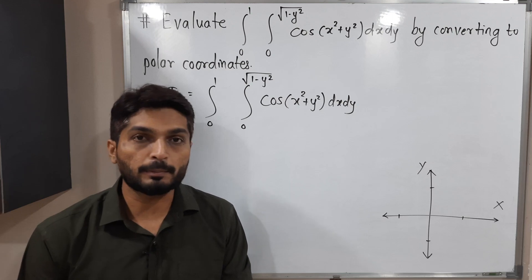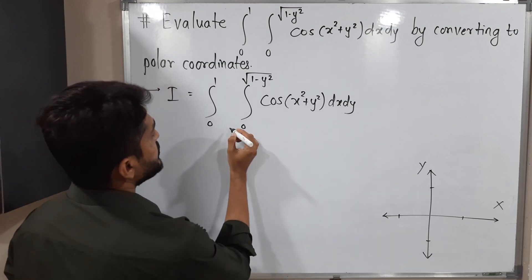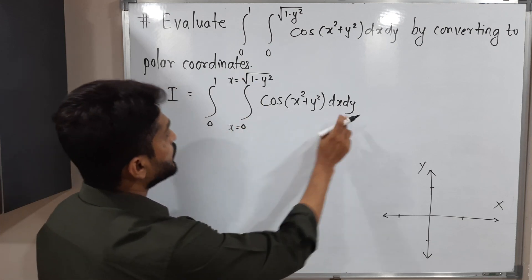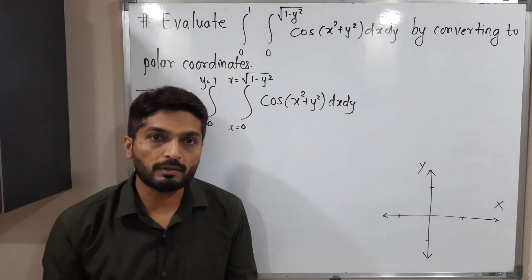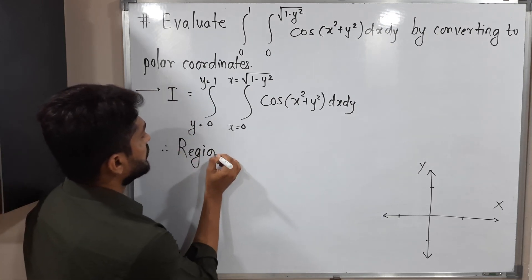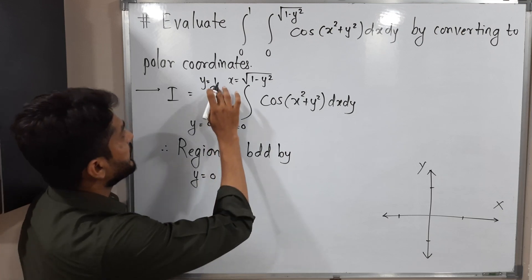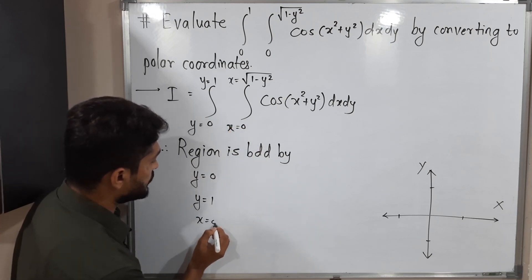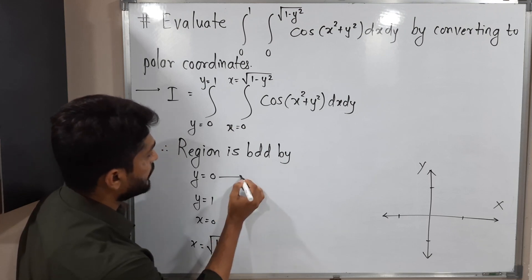The inner integration is with respect to X, so these are the limits of X. The outer integration is with respect to Y, so these are the limits of Y. From these limits, we will find the region of integration. The region is bounded by: Y=0, Y=1, X=0, and X=√(1-Y²).